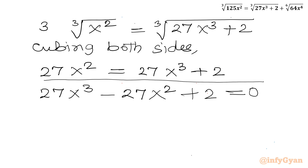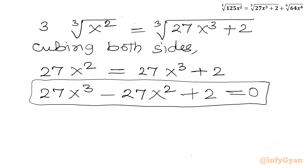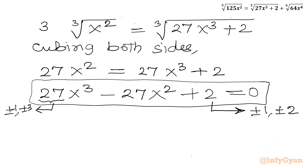This is a cubic equation. I will solve it using the rational root theorem and synthetic division method. Let me find all eligible factors of the constant term 2: plus or minus 1 and plus or minus 2. Similarly, the eligible factors of the leading coefficient 27 are: plus or minus 1, plus or minus 3, plus or minus 9, and plus or minus 27.